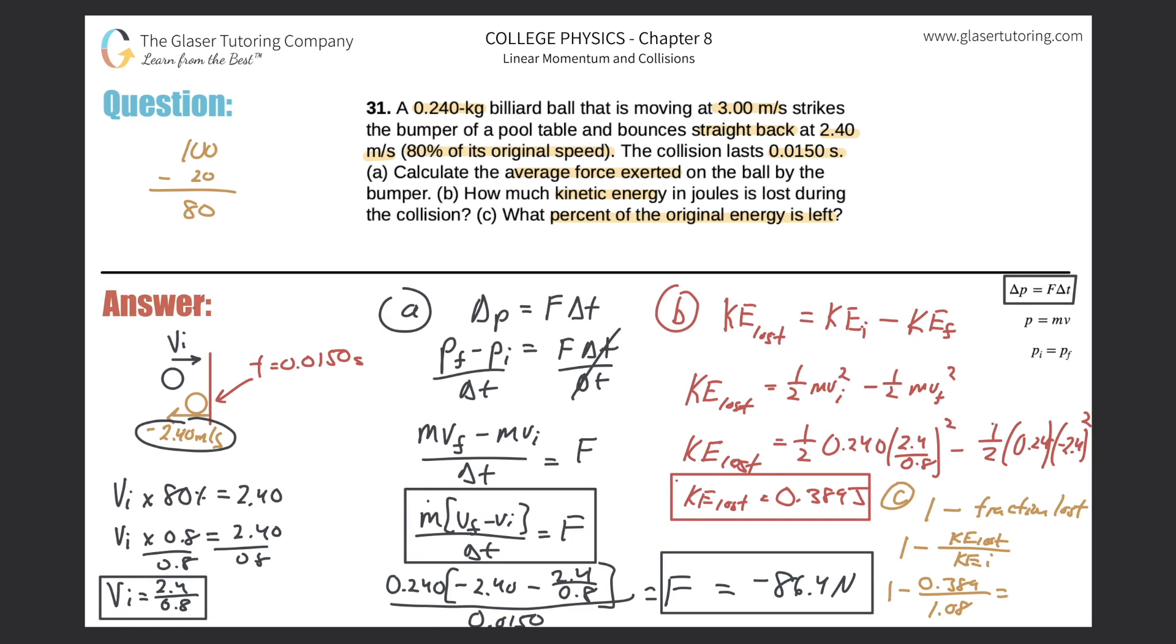We get about 64%. The decimal value is 0.6398, which is about 0.64. But I know I need it in percent, so I convert that, multiply it by 100. So 64% is left because we lost about 36%. That's the answer.